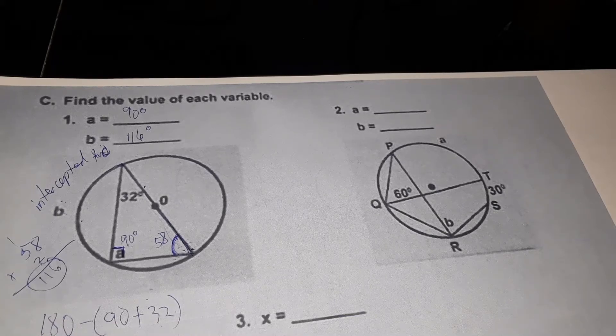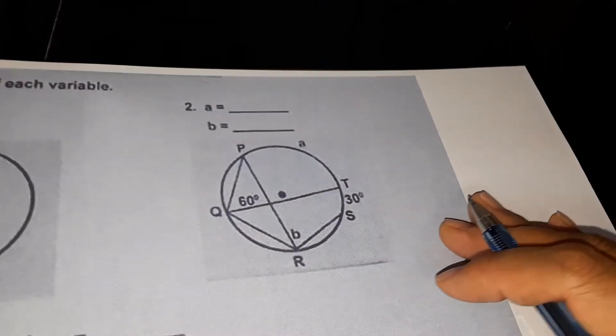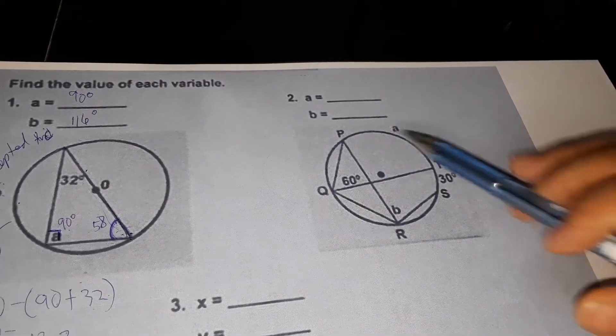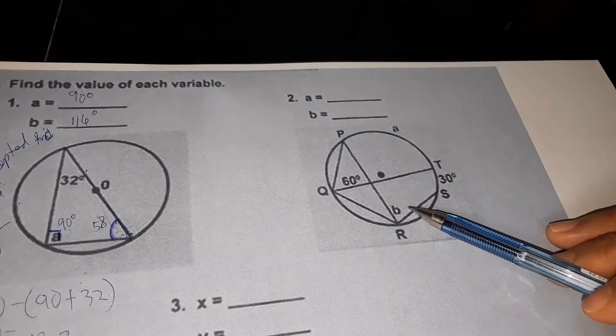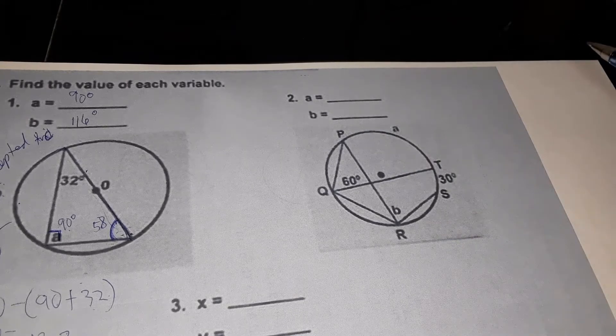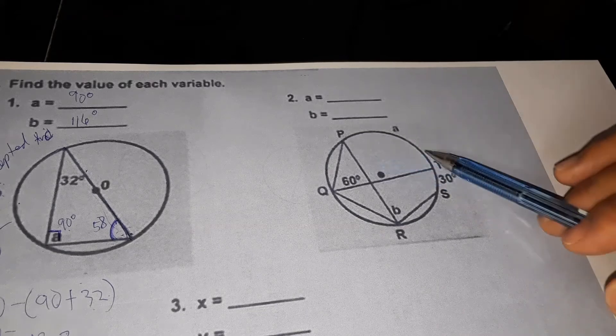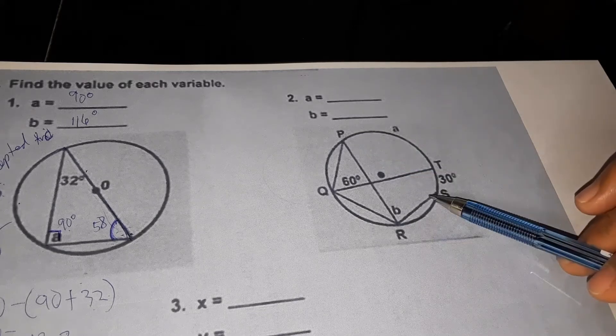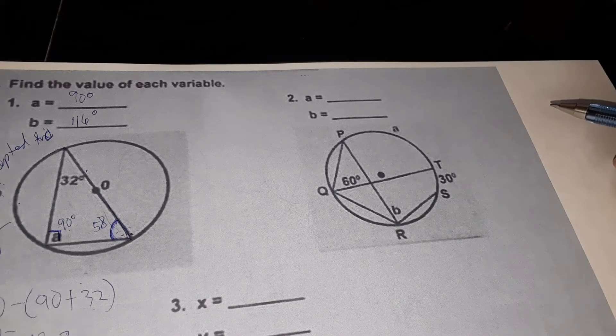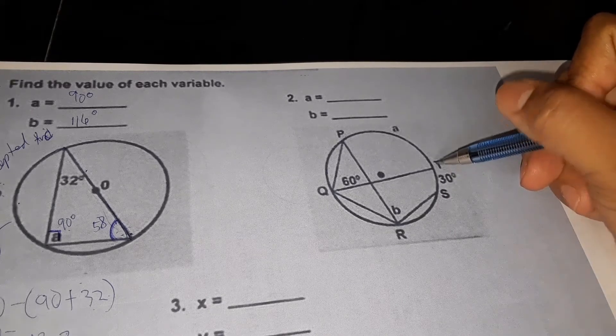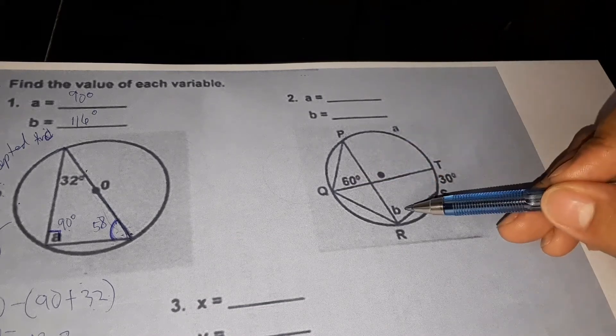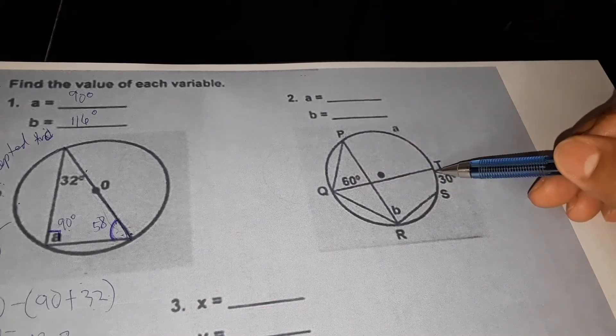How about number 2? In number 2, we need to find A and B. Where is A? This is A. Where is B? This is B. The given here are this angle and this arc.